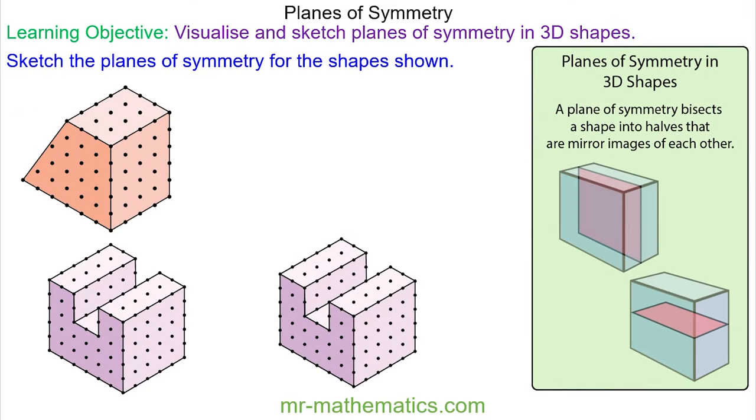If you've got isometric paper, do you want to try and identify the planes of symmetry in these 3D shapes? If you haven't got isometric paper, you can just sketch the 3D shape.